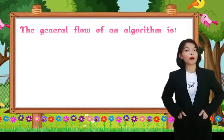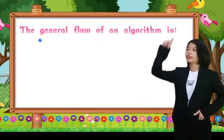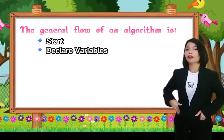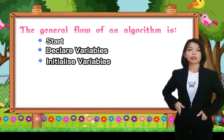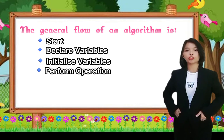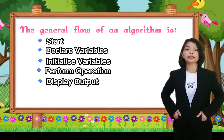The general flow of an algorithm is: Start, declare variables, initialize variables, perform operation, display output, and stop.